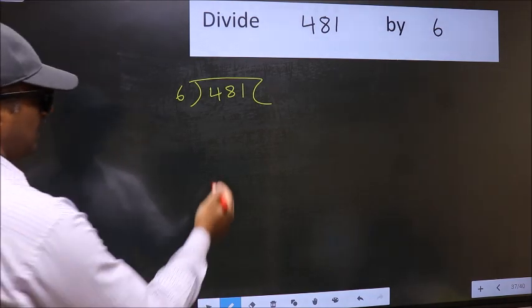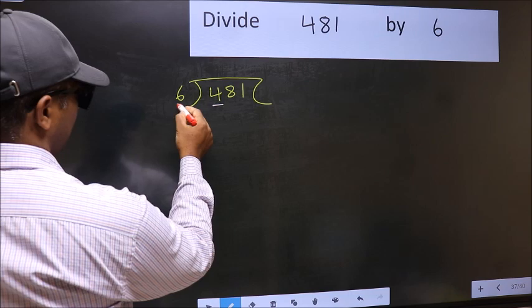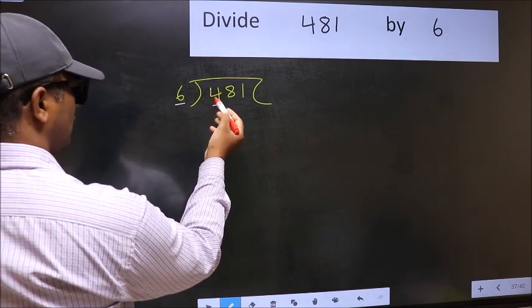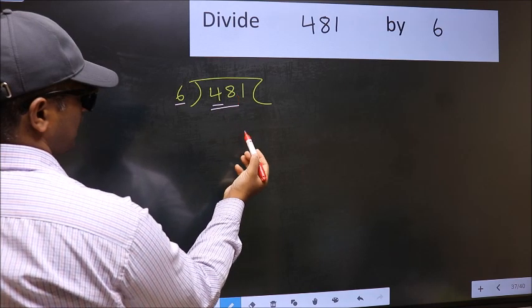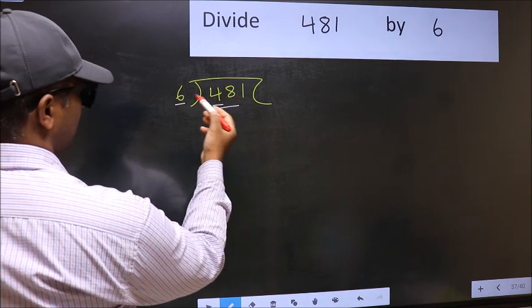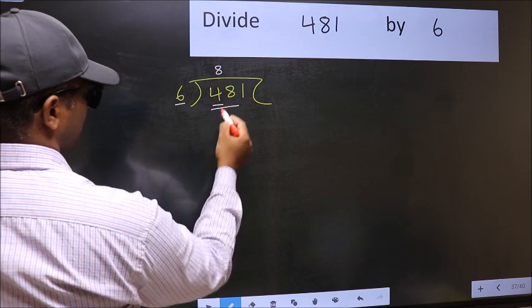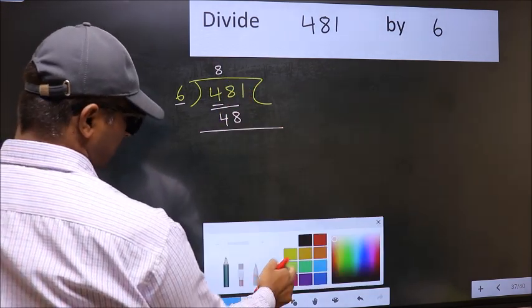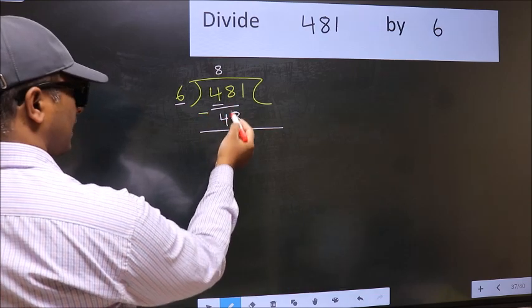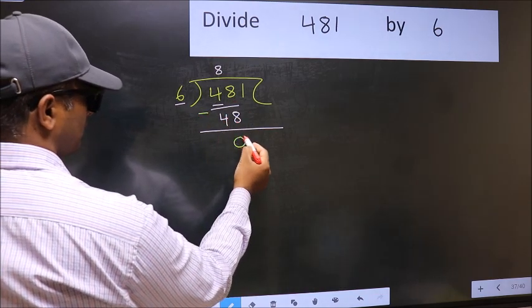Here we have 4 and here 6. 4 is smaller than 6, so we should take two numbers, 48. When do we get 48 in 6 table? 6 times 8 is 48. Now you should subtract. 48 minus 48 is 0.